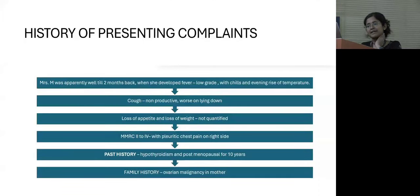History of presenting illness: she was apparently well till around two months ago when she developed fever, which was low-grade, with chills and evening rise. Non-productive cough, worsening on lying down was associated with it. She also had complaints of loss of appetite and loss of weight, with worsening of breathing difficulty from MMRC 2 to MMRC 4, associated with pleuritic chest pain on the right side.